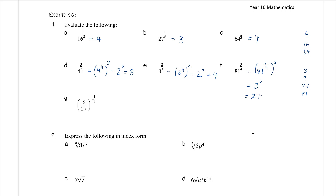Eight over twenty-seven to the power of negative one third: the negative power means taking the reciprocal of the base, not of the power, so this becomes twenty-seven over eight to the power of positive one third. That is twenty-seven to the power of one third over eight to the power of one third. Cube root of twenty-seven is three, cube root of eight is two, so the answer is three over two.